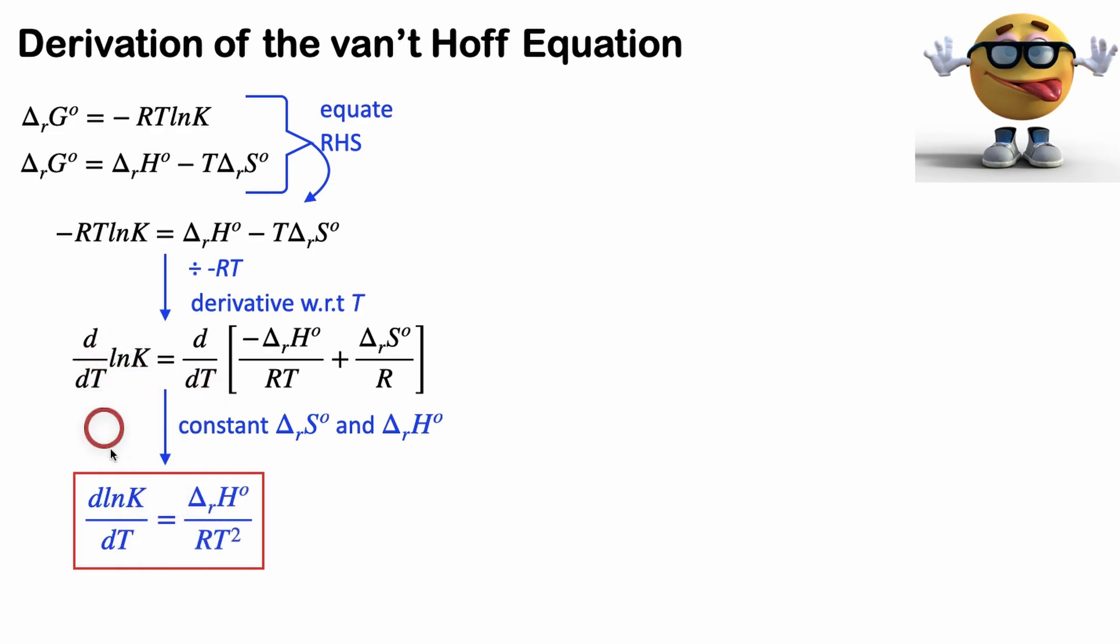This left-hand side stays the same. Here, we're taking the derivative of negative 1 over T, which is 1 over T squared. Everything else is constant, and the derivative of a constant is zero. And my friends, this is the van't Hoff equation in its differential form.